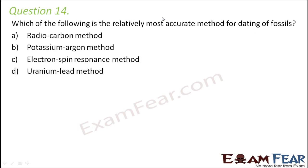Question number 14. Which of the following is the relatively most accurate method for dating of fossils? Radiocarbon method, potassium-argon method, electron spin resonance method, or uranium-lead method? The electron spin resonance method is one of the most accurate methods, and it has an additional advantage that it can be used to date fossils as well as newly formed materials.